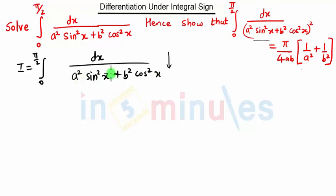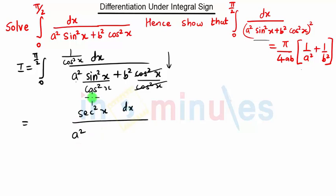Here we have a²sin²x + b²cos²x. I am dividing the numerator by cos²x and dividing the denominator by cos²x. So cos²x/cos²x will get canceled. 1/cos²x will be sec²x dx upon a²tan²x + b², integration 0 to π/2. So now we have to solve this integration.